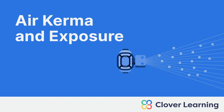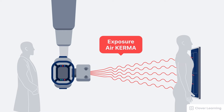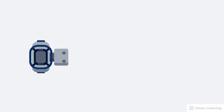Hey, everybody. Welcome back. This is the second video in a series on radiation units and measurements. In this lesson, we're talking about exposure and air kerma. Remember that all radiation measurements in diagnostic imaging fall into two categories: radiation in air, which includes exposure and air kerma, and radiation in tissue, which includes absorbed dose, equivalent dose, and effective dose. Exposure and air kerma are both very important in the context of occupational safety and patient safety.